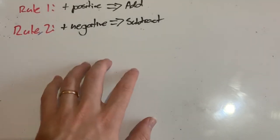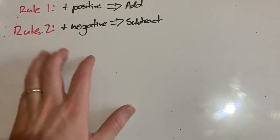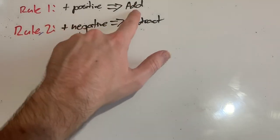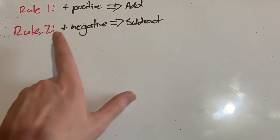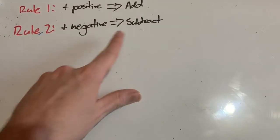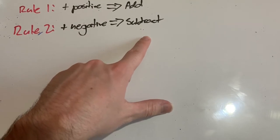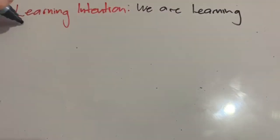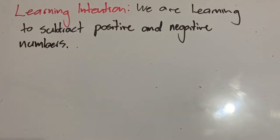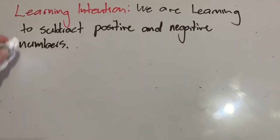We have looked at the rules for adding positive and negative numbers. If we add a positive number, we're actually adding, it's just normal addition. And if we are adding a negative number, we're actually subtracting that number. Today our learning intention is that we are learning to subtract positive and negative numbers.